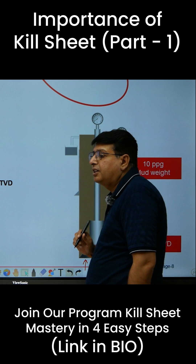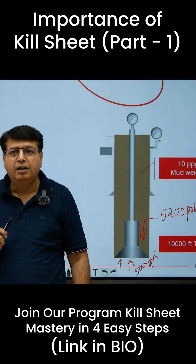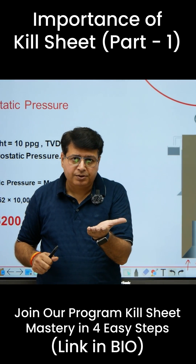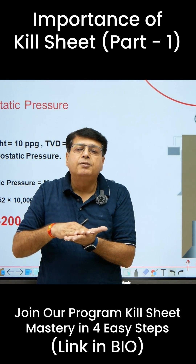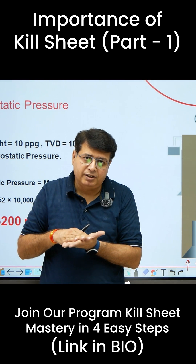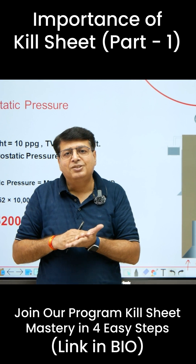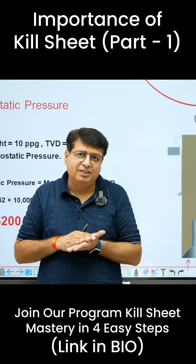So what is the condition of the well? The upward pressure is 5000 psi and the downward pressure is 5200 psi — this condition is called an overbalance condition.